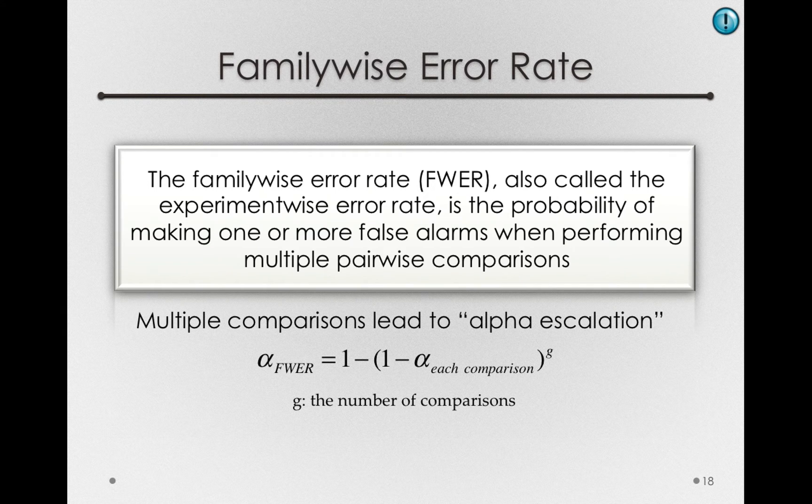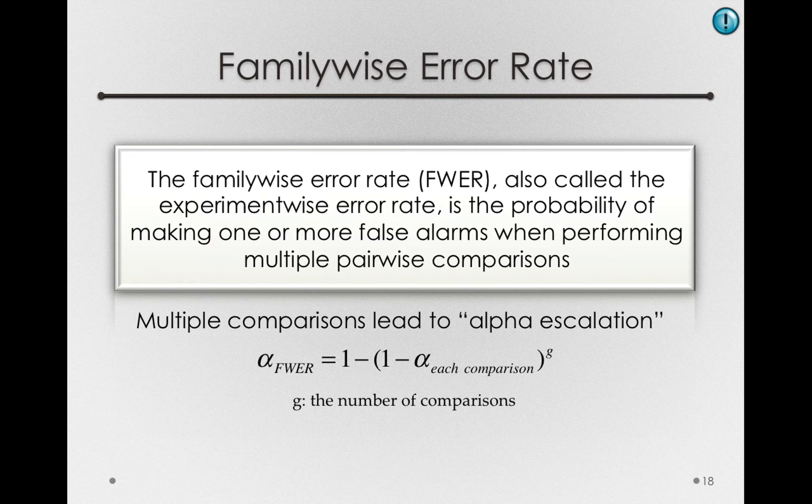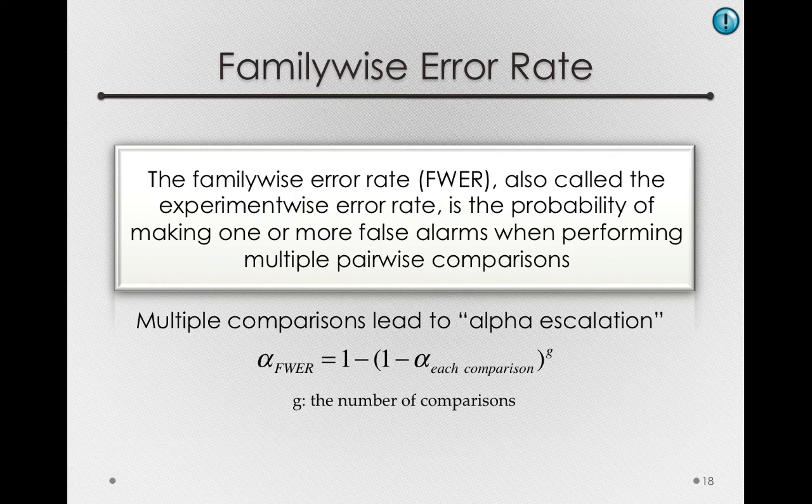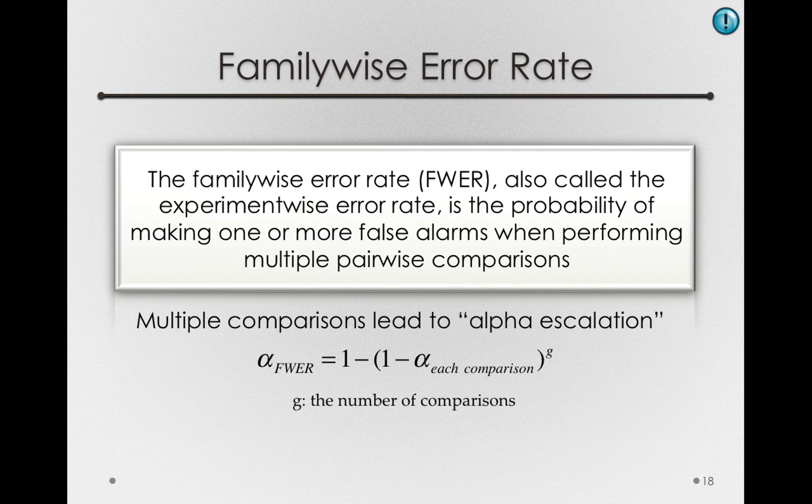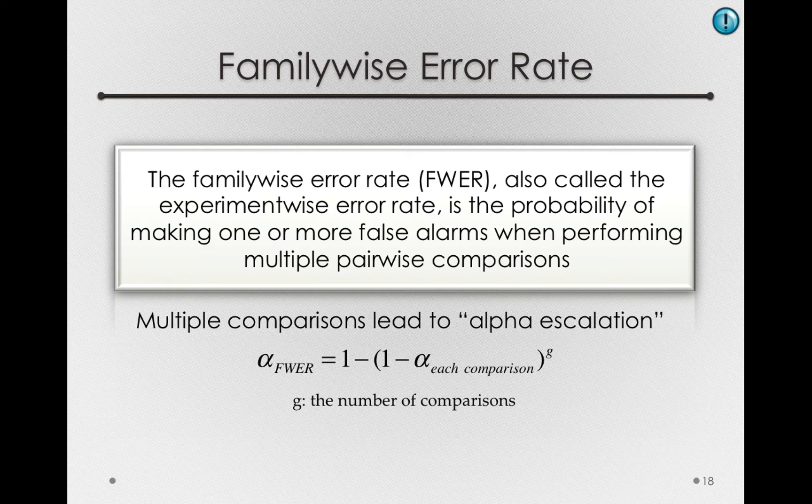One way of writing this is that alpha for the family of comparisons is equal to 1 minus the probability of not false alarming, that is, 1 minus the alpha for each comparison, raised to the power of g, where g is the number of comparisons we're making.